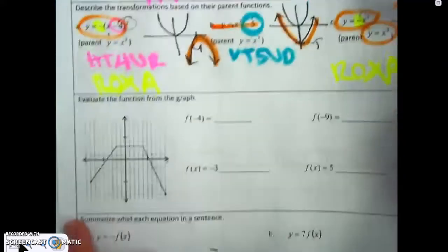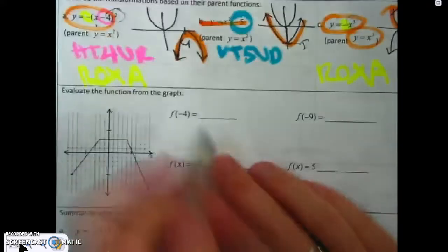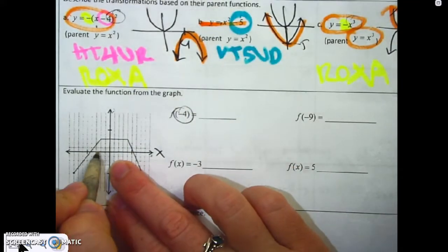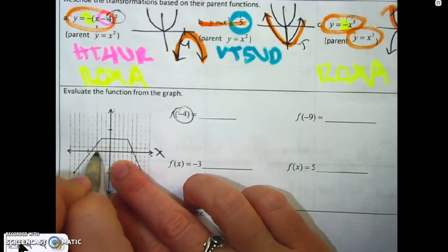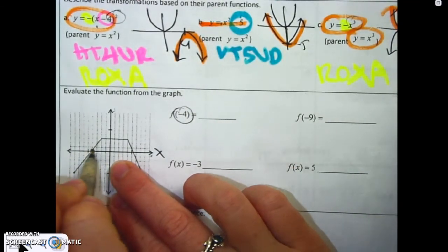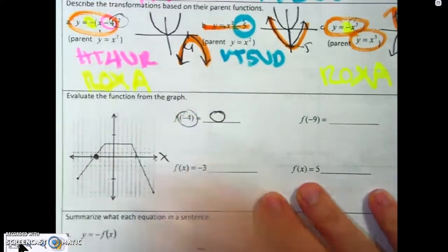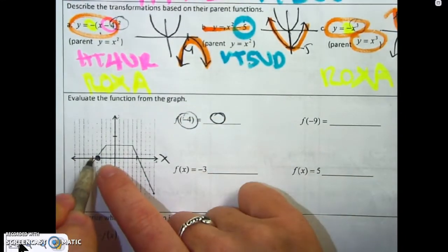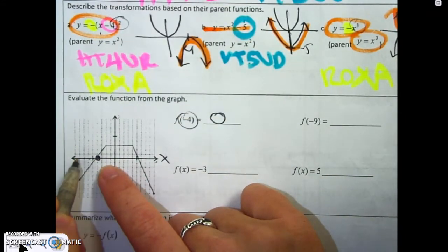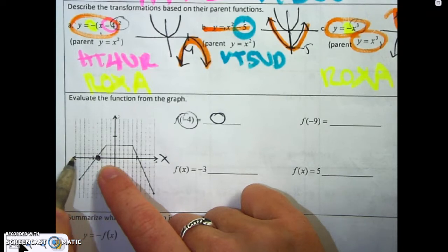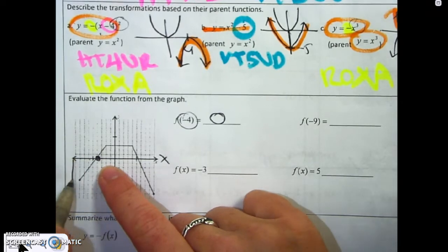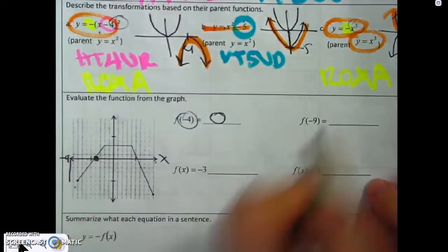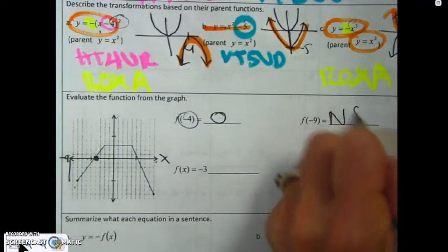On this one, evaluate by finding negative 4 on the x-axis: 1, 2, 3, 4 — it's right there, and the value is 0. For negative 9, that is not part of the function, so that would be no solution. Be careful of that.